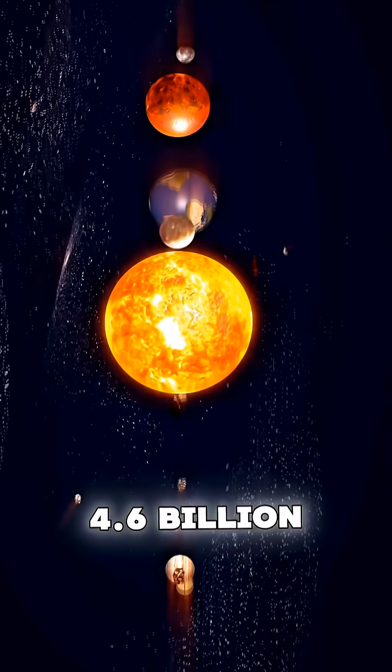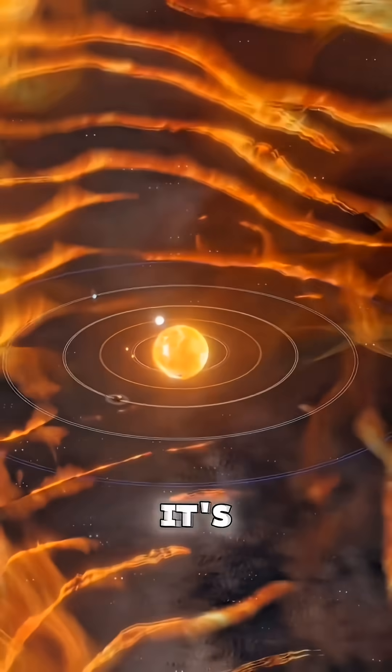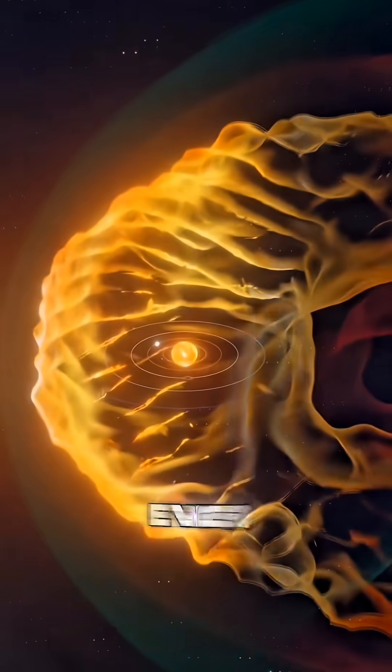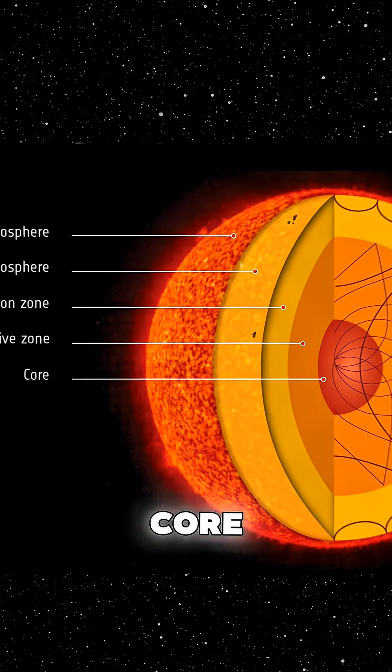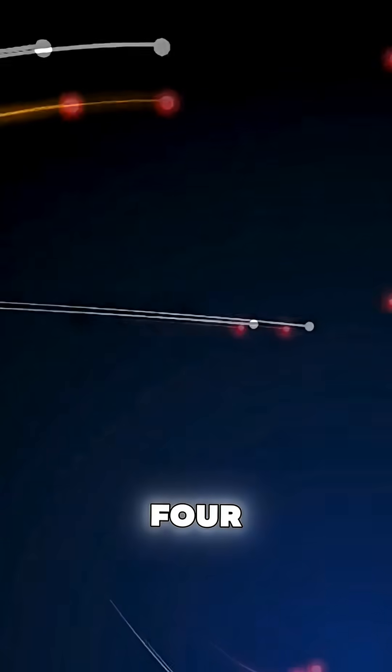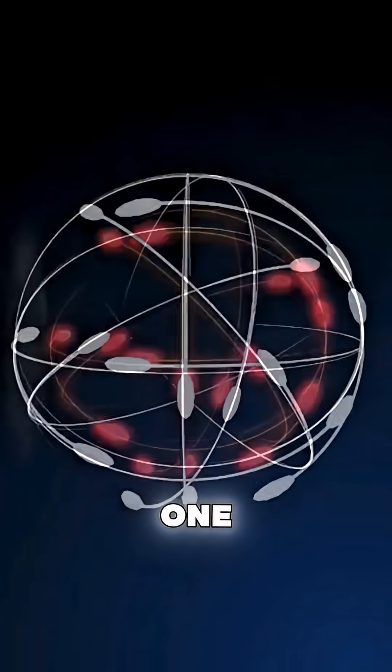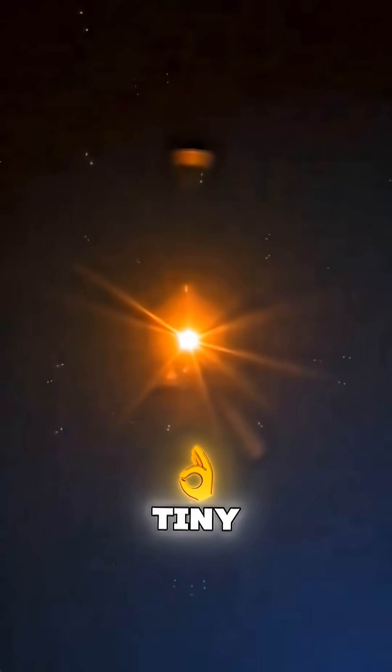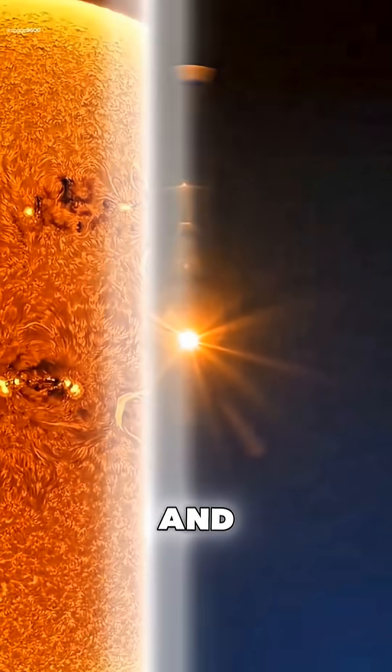It was born 4.6 billion years ago, and it's been doing something terrifying ever since. Inside its core, the Sun produces energy through nuclear fusion. Four hydrogen atoms fuse into one helium atom. A tiny bit of mass vanishes and turns into energy.